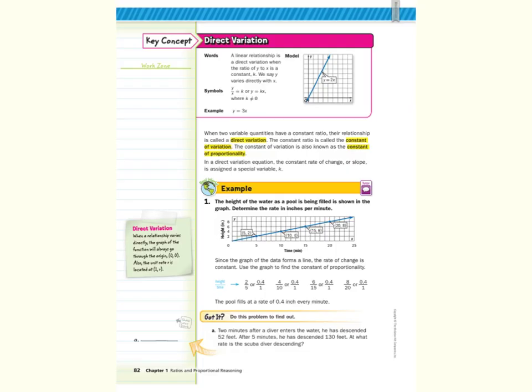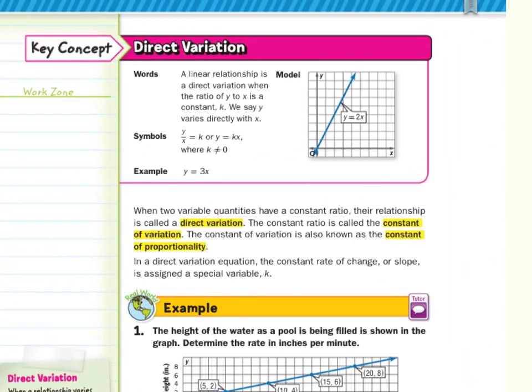Our key concept is that of direct variation. Direct variation is a linear relationship is a direct variation when the ratio of y to x is a constant, k. We say y varies directly with x. An example of this, y equals 3x. When two variable quantities have a constant ratio, their relationship is called a direct variation. The constant ratio is called the constant of variation. The constant of variation is also known as the constant of proportionality. In a direct variation equation, the constant rate of change or slope is assigned a special variable.